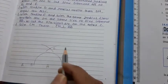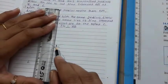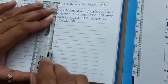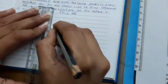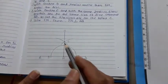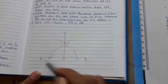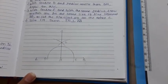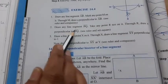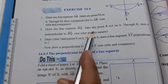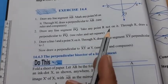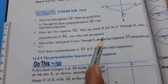Join CM. CM perpendicular to AB — this is our answer. Next is the second part: draw any line segment PQ, take any point R, but R is not on the line — take it outside.